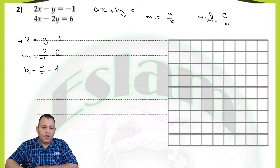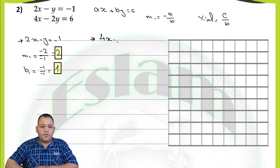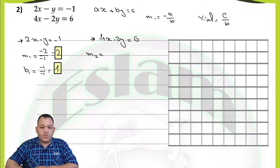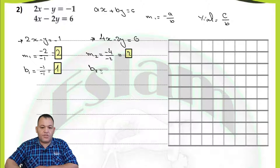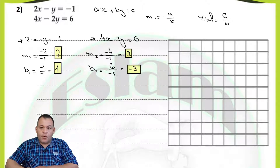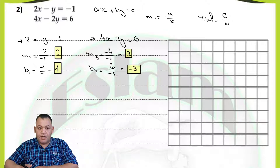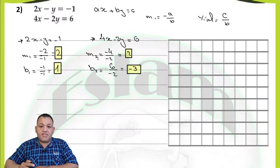From the second equation, 4x minus 2y equals 6, we find m2 equals negative a over b, which is negative 4 over negative 2, equaling 2. The y-intercept 2 equals c over b, which is 6 over negative 2, equaling negative 3. Looking at slope 1 and slope 2, they are equal. We said before, if m1 equals m2, the two lines are parallel. Because the two lines are parallel, they will never intersect, which means there is no solution.